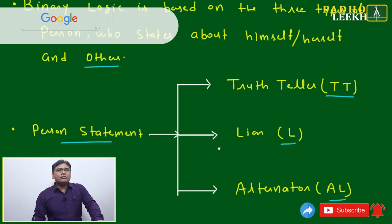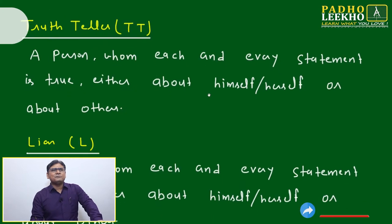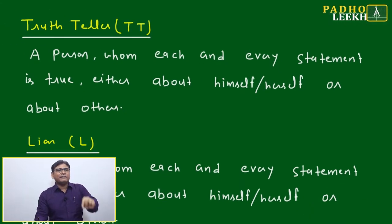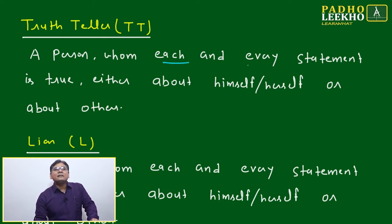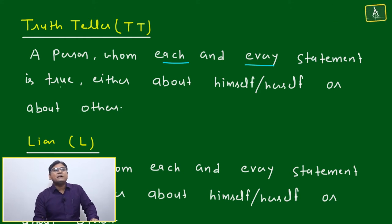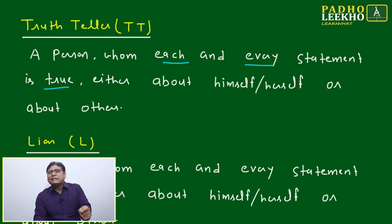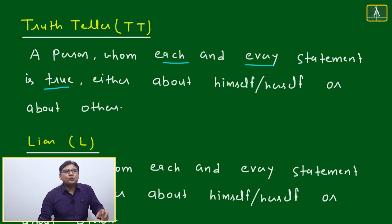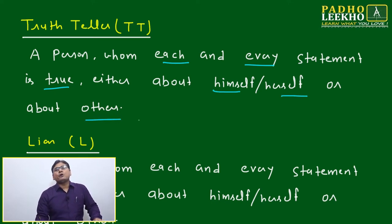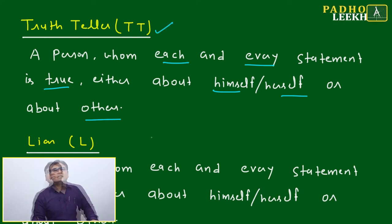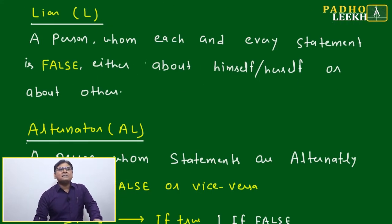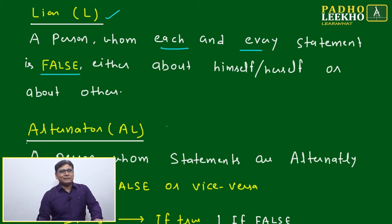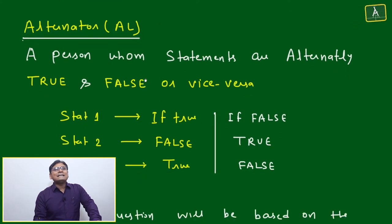The names are self-explanatory. A Truth Teller is a person whose each and every statement is true — not a single statement is false, whether about himself or others. A Liar is a person whose each and every statement is false.